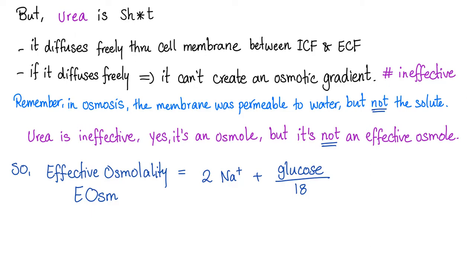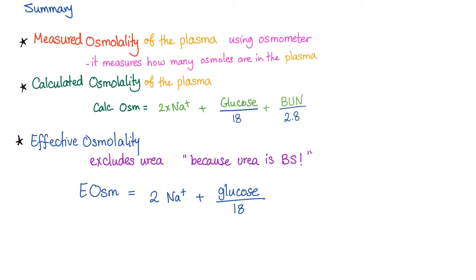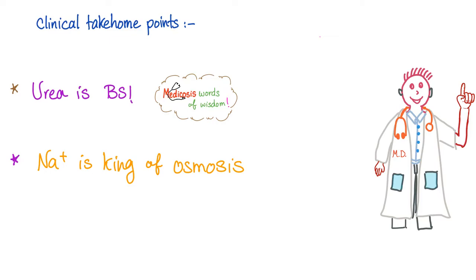So, to measure effective osmolality, we only need sodium and glucose. Urea is BS. This is called effective osmolality, or e-osmolality. To sum up: measured osmolality is measured in the lab; calculated osmolality uses the equation depending on the big three; effective osmolality depends only on the big two because urea is BS. What will a nephrologist tell you? Urea is BS — it's not effective osmosis. And sodium is the king of osmosis, also the major extracellular cation.